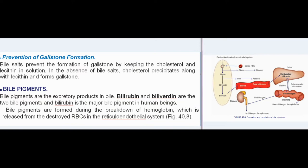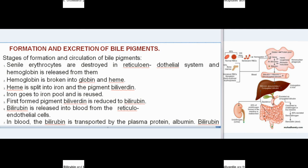Bile pigments are the excretory products in bile. Bilirubin and biliverdin are the two bile pigments; bilirubin is the major bile pigment in human beings. Bile pigments are formed during the breakdown of hemoglobin, which is released from destroyed RBCs in the reticuloendothelial system.